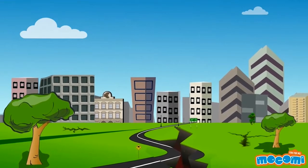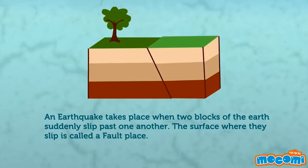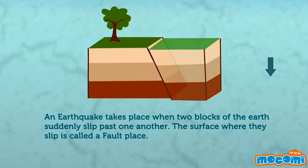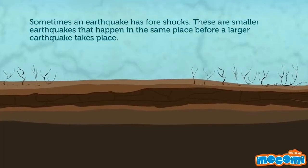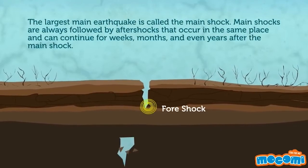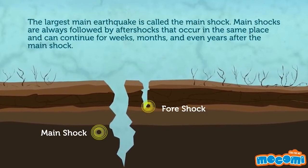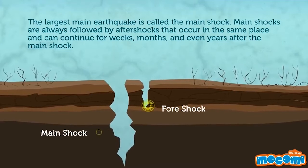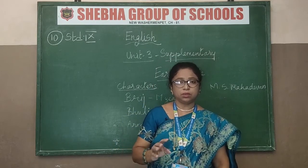What is an earthquake? An earthquake takes place when two blocks of earth suddenly slip past one another. The surface where the slip occurs is called a fault. Sometimes an earthquake has foreshocks — smaller earthquakes that happen in the same place before a larger earthquake. The larger main earthquake is called the main shock, and it is always followed by aftershocks that occur in the same place and continue for weeks.